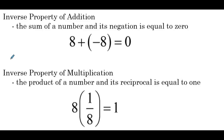The inverse property of addition states the sum of a number and its negation is equal to 0. And the inverse property of multiplication states the product of a number and its reciprocal is equal to 1. So for the inverse property of addition, our example is 8 plus negative 8 is equal to 0. And for the inverse property of multiplication, our example is 8 times 1/8 is equal to 1.